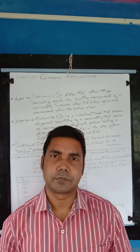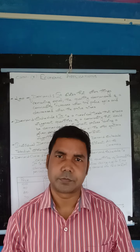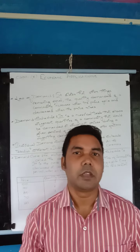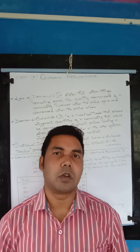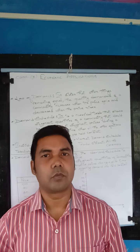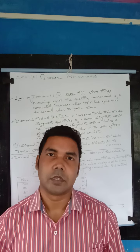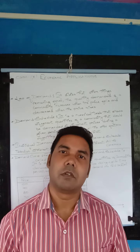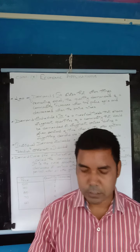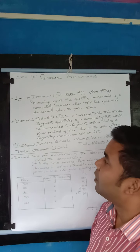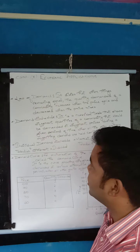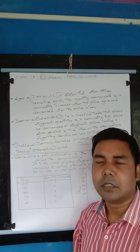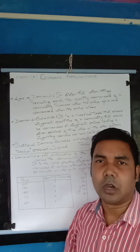The demand and price of a commodity have an inverse relation — they don't have a direct relation. When the price of any commodity increases, the demand for that commodity decreases. If the price of the commodity decreases, the demand will increase. Today we will discuss the law of demand, individual demand curve and schedule, market demand curve and schedule, and exceptions to the law of demand.